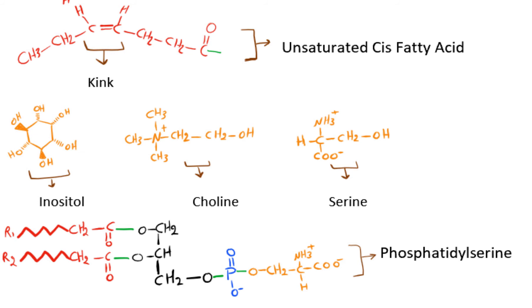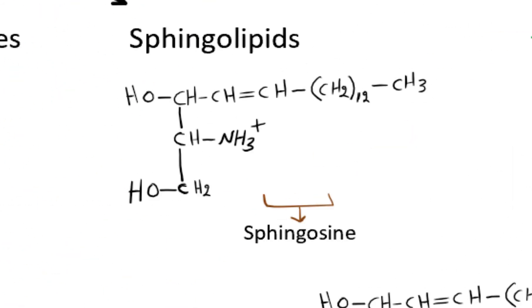For example, when having serine as the identity molecule, the phosphoglyceride is then called phosphatidylserine.